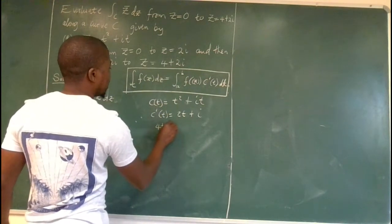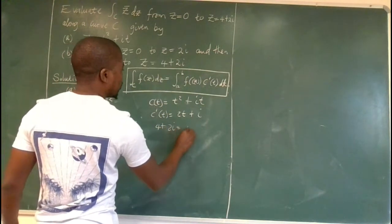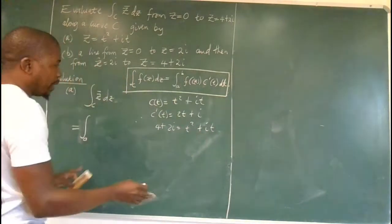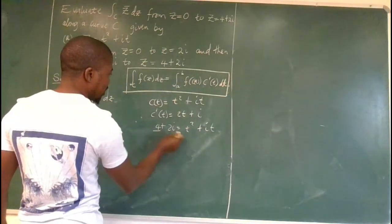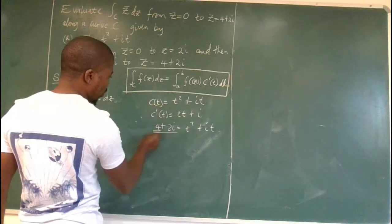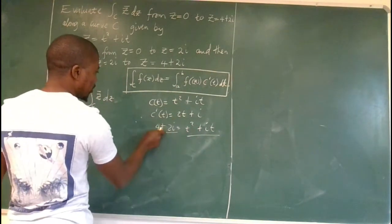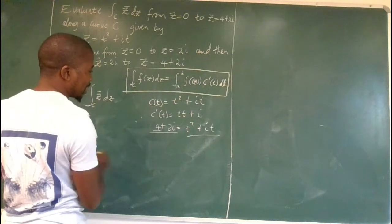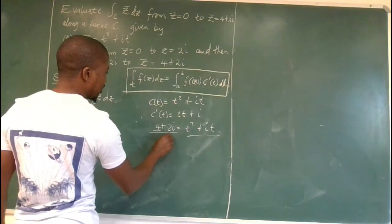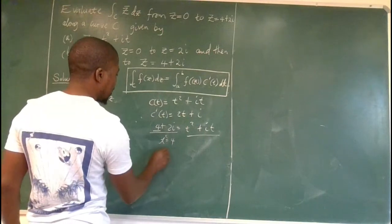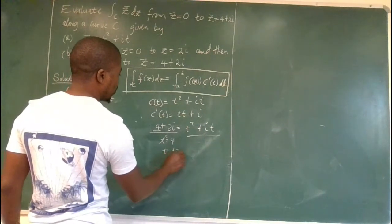So we just say 4 plus 2i is equal to t squared plus i t. So we can just compare. This is a complex number and that's a complex number, right? So the real part will compare to the real part on the left side. So you can see that t squared is 4 and t is equal to plus or minus 2.